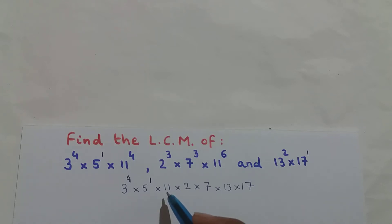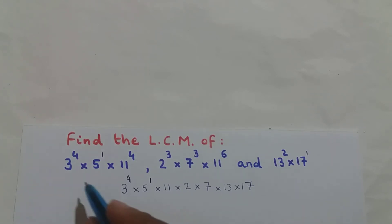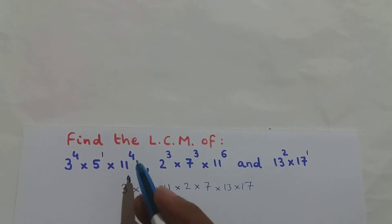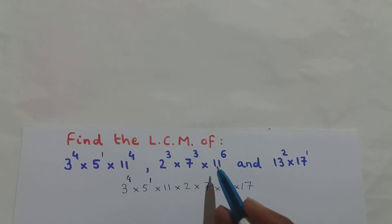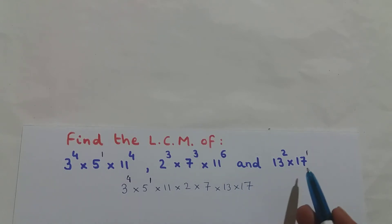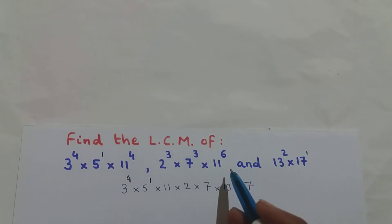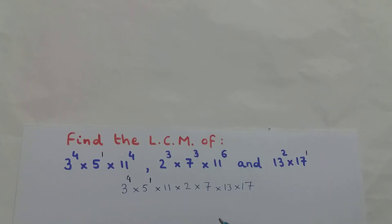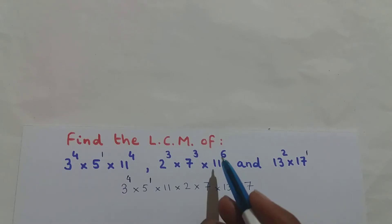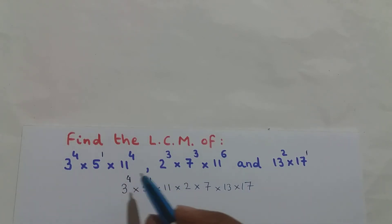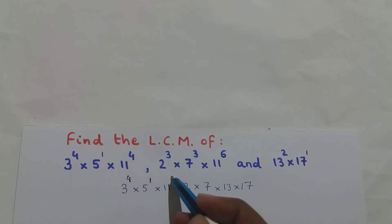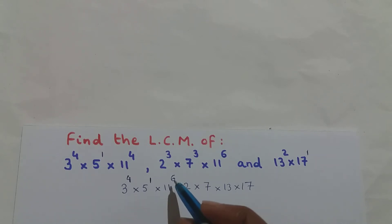Now, what is the exponent of base 11? In the first expression I have 11 raised to the power of 4. In the second expression I have 11 raised to the power of 6. Base 11 doesn't occur in the third expression. Since we pick the greater exponent, and 6 is greater than 4, the exponent of base 11 is 6.